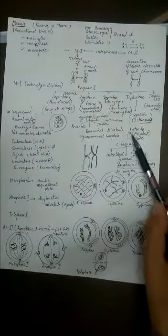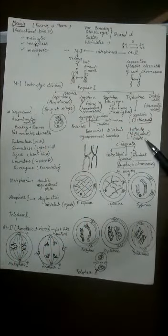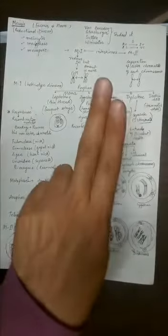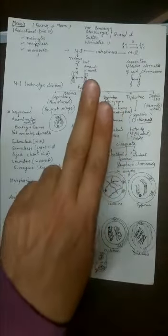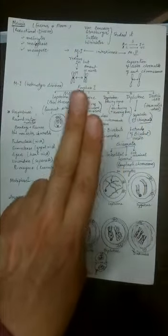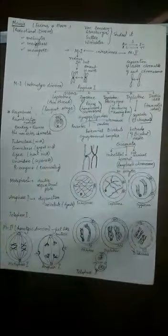So tetrads are visible at this time. Tetrads are also called bivalents. This is univalent, this is bivalent. This is monad, dyad, tetrad. Remember all these terminologies of biology.